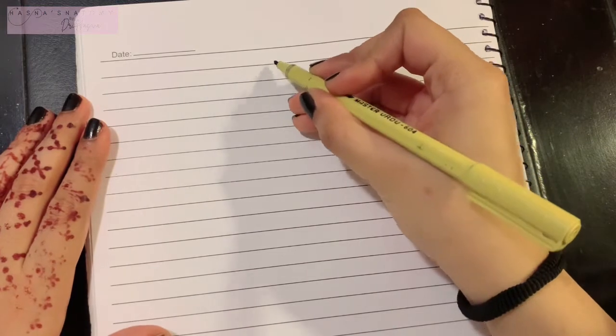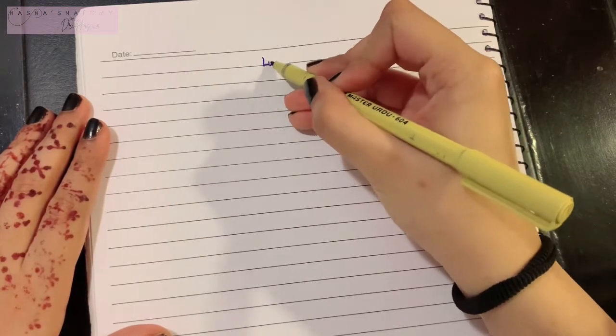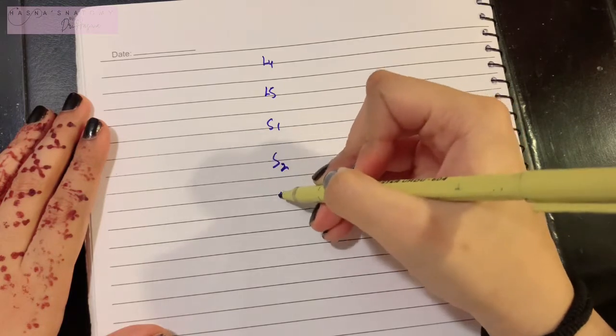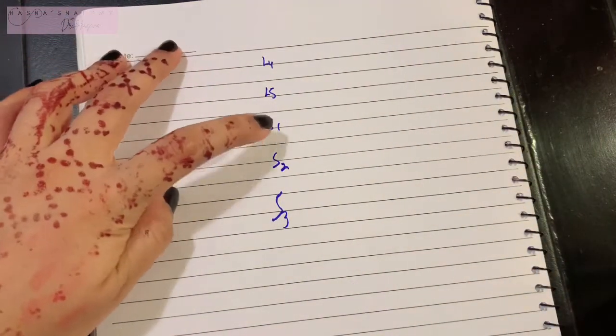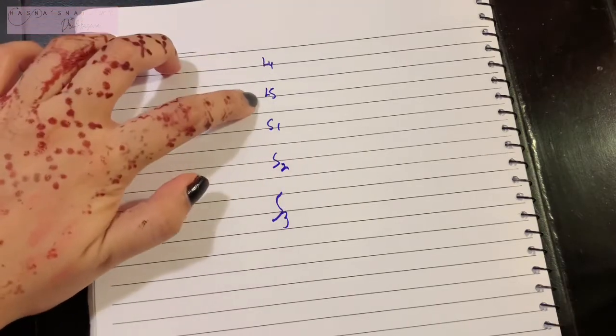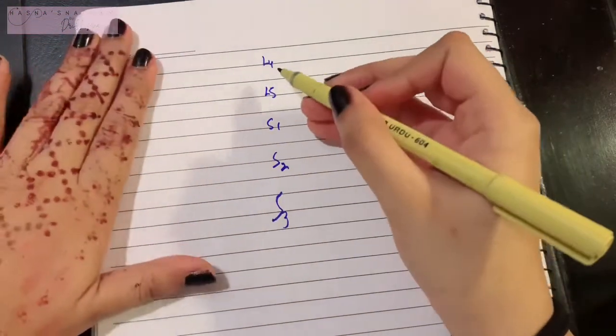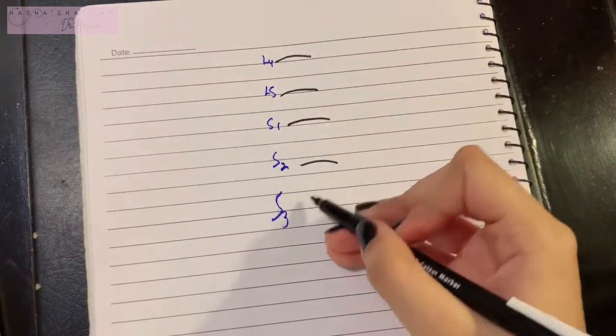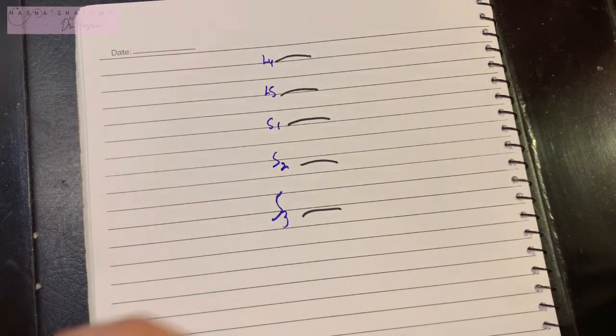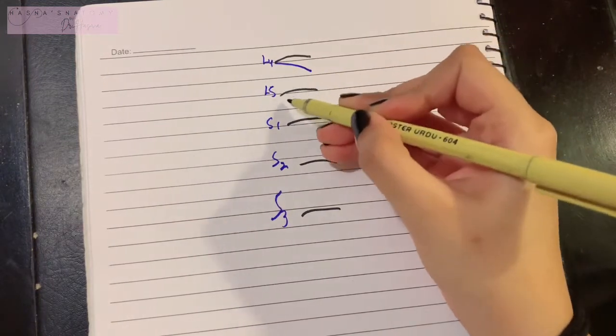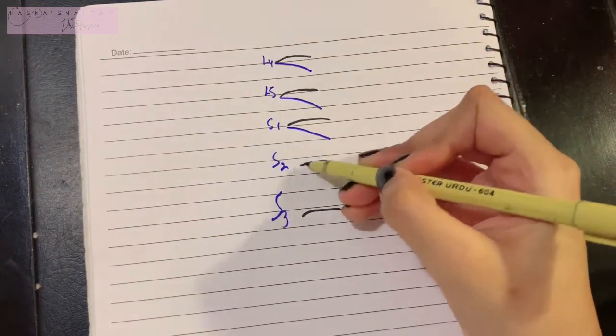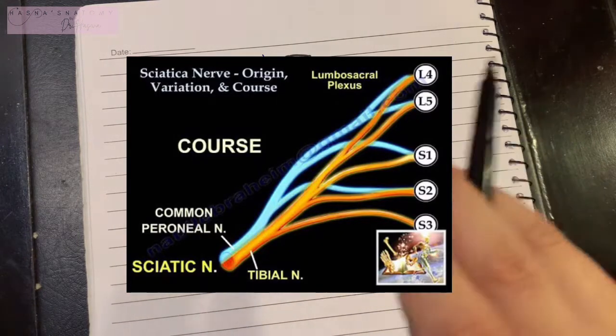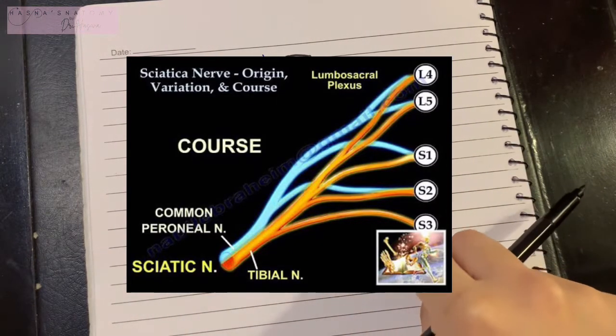The sacral plexus is made up of L4, L5, S1, S2, and S3 root values. Each of the anterior primary rami of these nerves give an anterior division, and all of these at the same time also give a posterior division. Why the division? Well, the sciatic nerve arises from two parts: the tibial part and the common peroneal part.